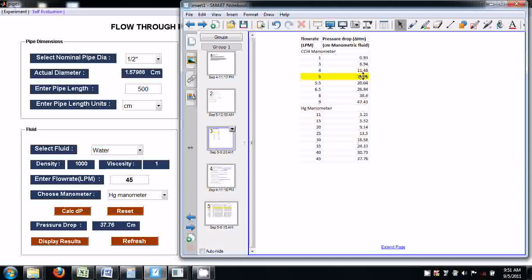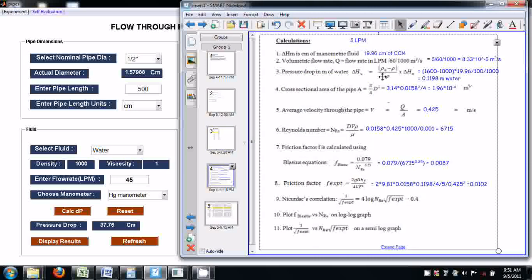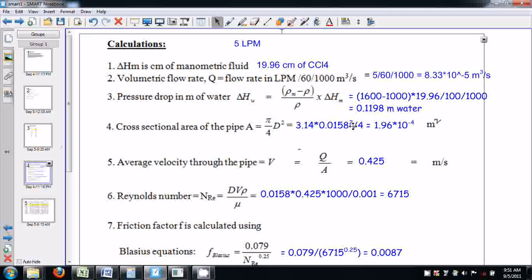At 5 lpm, the pressure drop is 19.96 cm CCL4. Volumetric flow rate is 5 lpm, let's convert that into meter cube per second. Keep all the units in SI units and pressure drop in meters of water column. This is centimeters of CCL4, let's convert that into meters of water column.